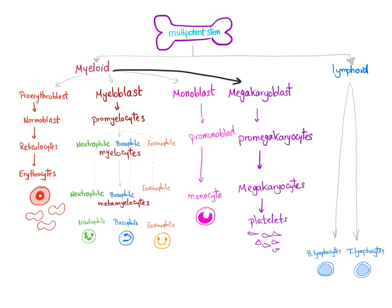The myeloid pro-erythroblast has the word 'erythro,' which means red, so it will give the red blood cells, also known as erythrocytes — 'cyte' means cell. A blast is a big cell that will form a smaller cell, so blast is the parent and cyte is the child. The pathway is: pro-erythroblast → normoblast → reticulocyte → erythrocyte.